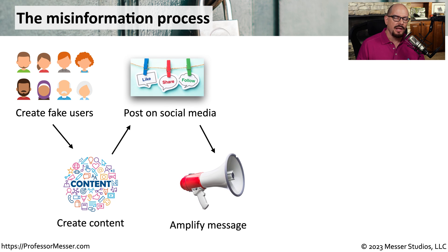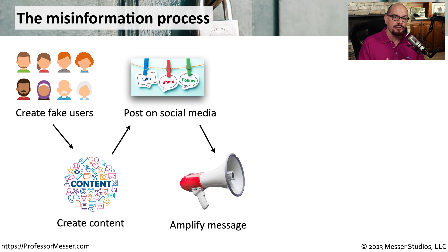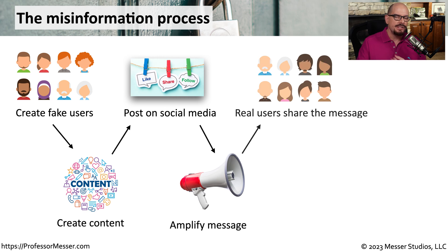Once it's posted online, the social media sites commonly have a like, a share, or a follow option. This will allow the attacker to amplify that message to a larger group of people. The algorithms within social media recognize when a particular post is being liked or shared, and will present that post to others as well. Once this algorithm shares it with others, there will be actual users that see this information and share it with other people that they know.